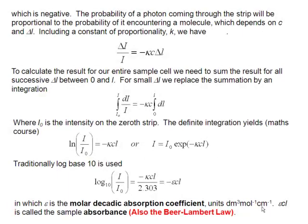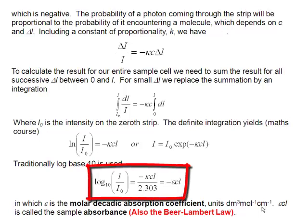The traditional way to assess the logarithm of I over I0 is to use logs to the base 10. So we write that as log base 10, and that means on the right-hand side we have to make a correction, dividing by 2.303. And so we include that 2.303 correction into our constant of proportionality, which was k, and that now becomes epsilon. Epsilon is just k divided by 2.303.